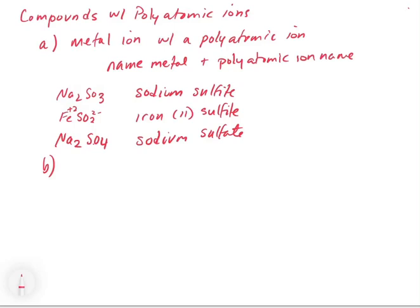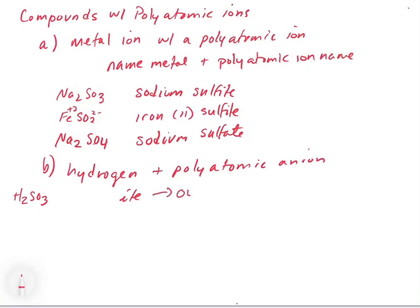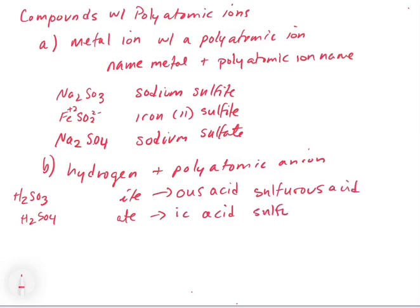Now let's look at polyatomic ions when we have an acid. So we have hydrogen plus the polyatomic anion. There's a couple of general rules. So ite goes to ous. And ate goes to ic. So this would be ous acid, and this would be ic acid. For example, H2SO3 would be sulfurous acid and H2SO4 would be sulfuric acid.